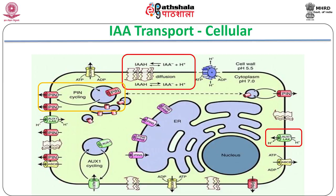Transport of auxin from the cells is a more regulated process. PIN proteins are important components of large multiprotein auxin efflux complexes. Location of the efflux complex varies according to the direction of IAA transported, and deposition of efflux complexes in specific locations on the plasma membrane gives rise to auxin gradients.